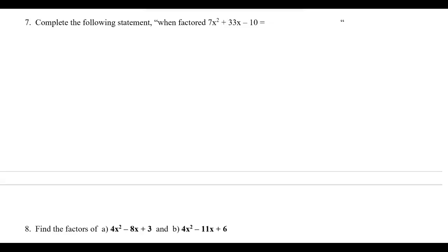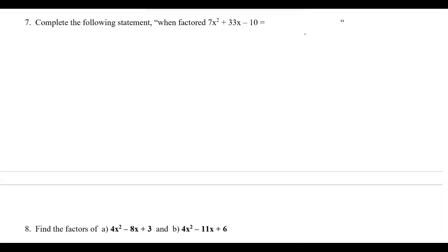Let's take a look at another example using the AC method. I'm going to multiply 7 times negative 10, so AC is going to equal 7 times negative 10, which is negative 70. I need factors that add up to get 33.